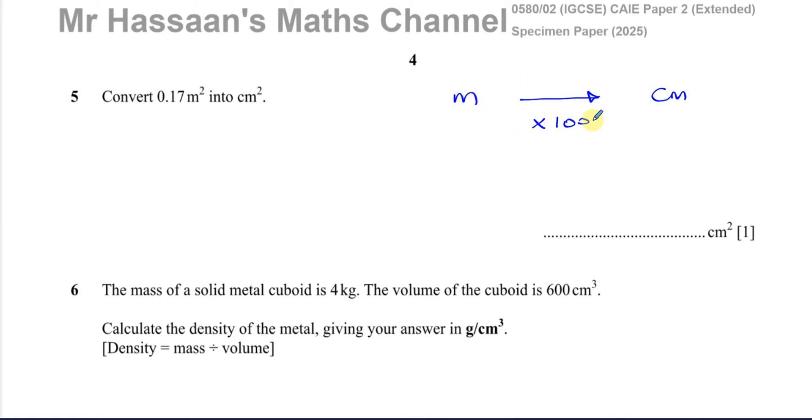However, here we have square units. So to convert square units we basically simply just square the conversion. So if we want to go from m² to cm², I don't multiply by 100, I multiply by 100 squared.